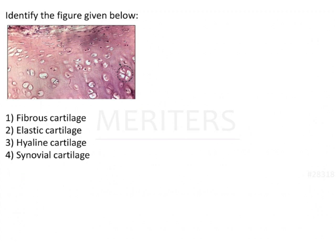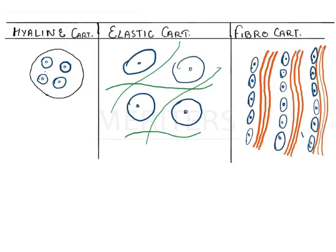The figure shown is a cartilage. There are three types of cartilages: hyaline cartilage, elastic cartilage, and fibrocartilage. I will give you the method by which you can identify the different kinds of cartilage.